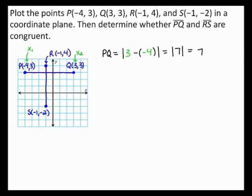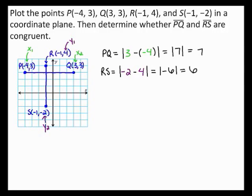Next, because segment RS is a vertical segment, the length of segment RS is equal to the absolute value of the difference of the y-coordinates of the endpoints. The y-coordinate of point R is 4 and the y-coordinate of point S is negative 2. So, the length of segment RS is equal to the absolute value of negative 2 minus 4. When you simplify, negative 2 minus 4 gives you negative 6 and the absolute value of negative 6 is 6. So, the length of segment RS is 6. As you can see, the length of segment PQ is not equal to the length of segment RS. Therefore, segment PQ is not congruent to segment RS.